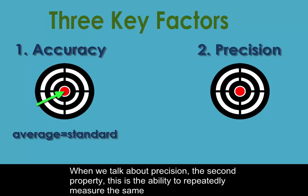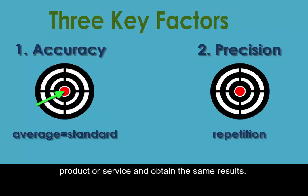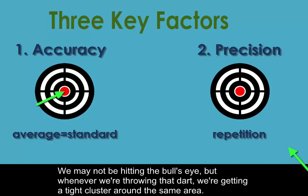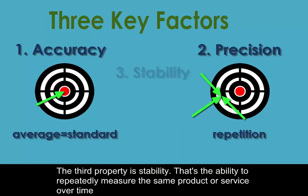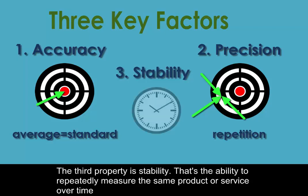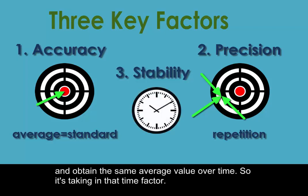When we talk about precision, the second property, this is the ability to repeatedly measure the same product or service and obtain the same results. We may not be hitting the bullseye, but whenever we're throwing that dart, we're getting a tight cluster around the same area. The third property is stability — the ability to repeatedly measure the same product or service over time and obtain the same average value over time, taking that time factor into account.